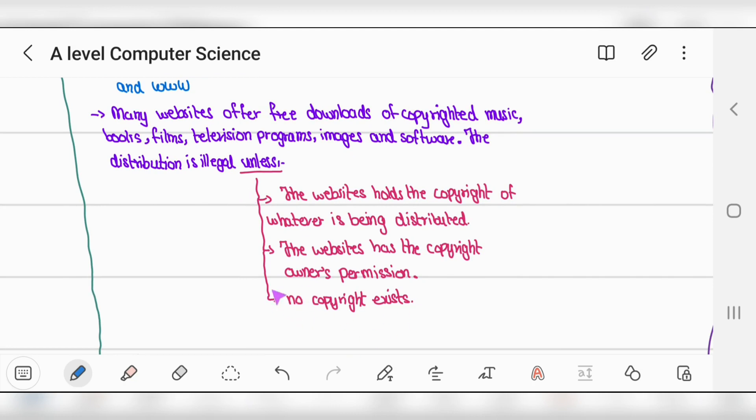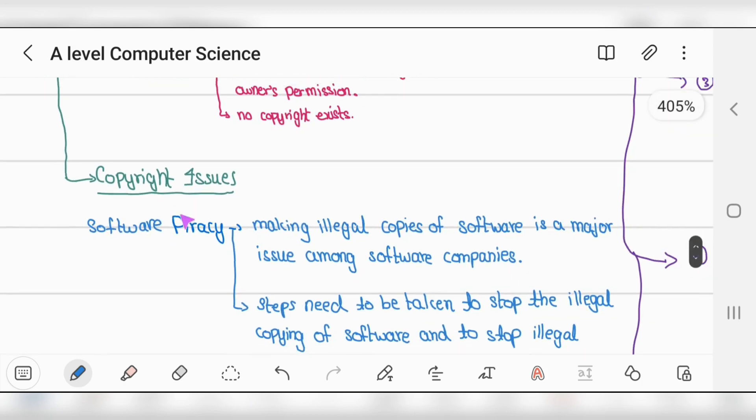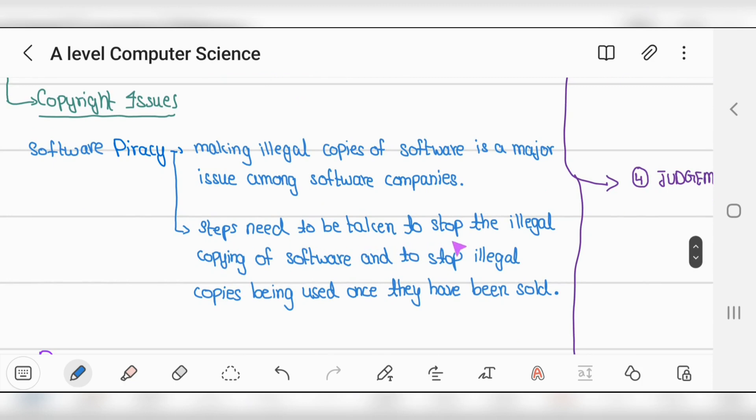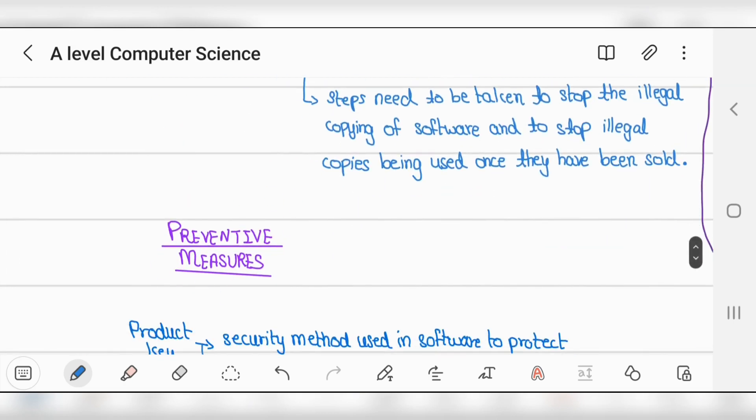Distribution is illegal unless the website holds the copyright or has the owner's permission. No copyright exists if the product is open source - you can use it freely but cannot sell it for commercial gain or personal profit. Copyright laws give you the right to use freely but not for commercial use.